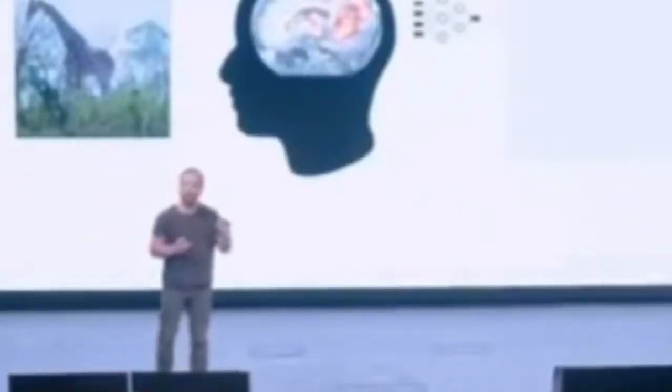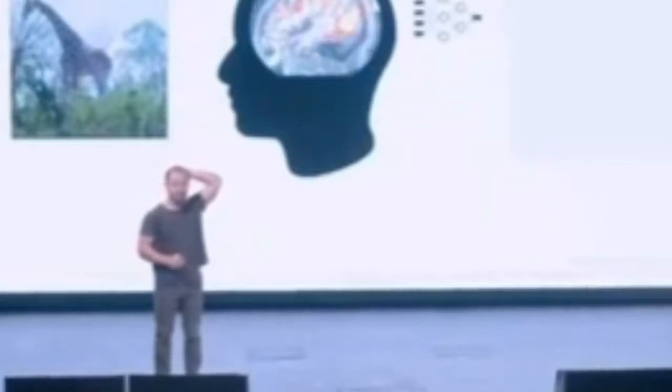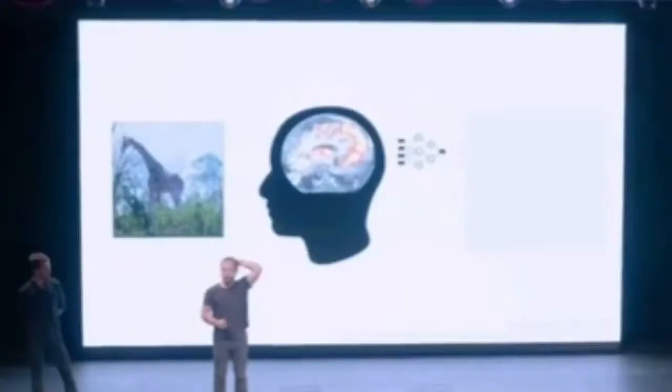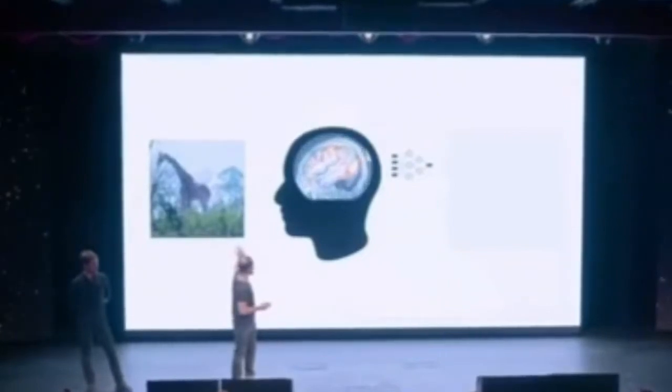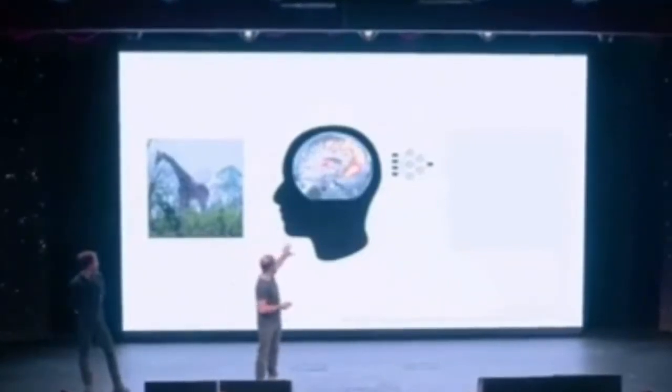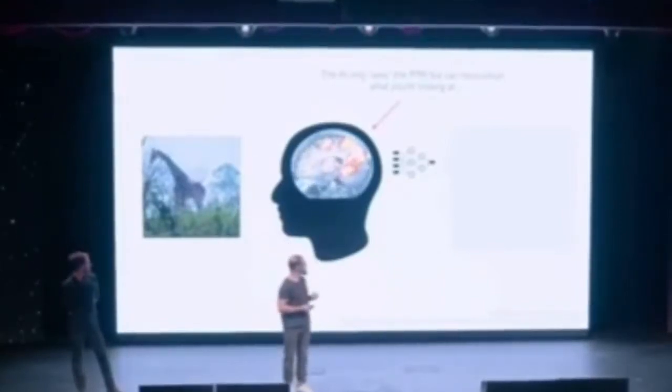Can we go from the patterns of your brain when you're looking at an image to reconstructing the image? The way this worked was they put human beings inside an fMRI machine, had them look at images and figure out what the patterns are — translate from image to brain patterns — and then they would hide the image. So this is an image of a giraffe that the computer has never seen; it's only looking at the fMRI data, and this is what the computer thinks the human is seeing.